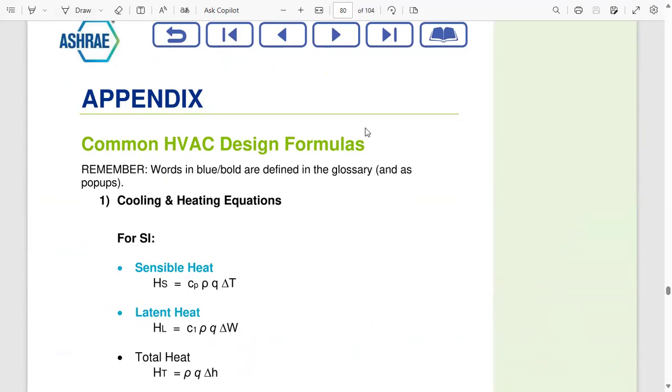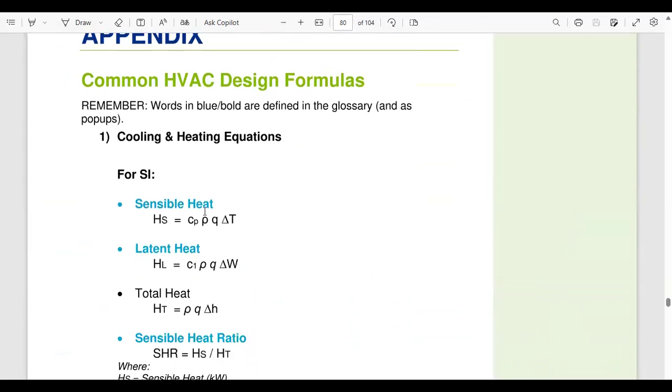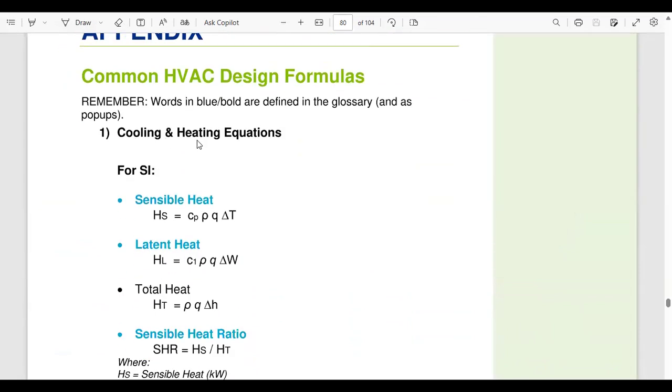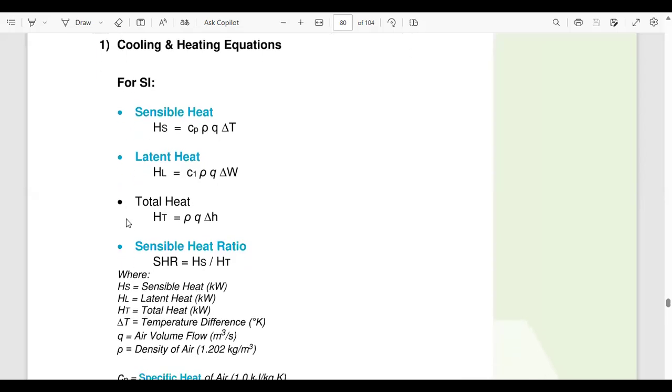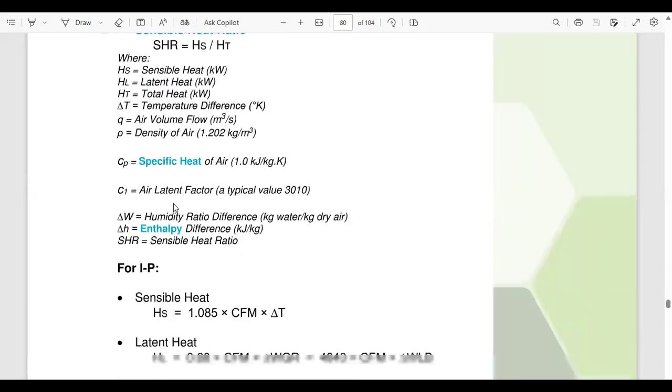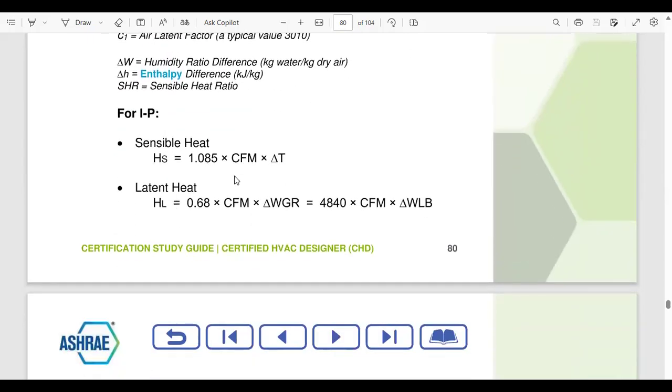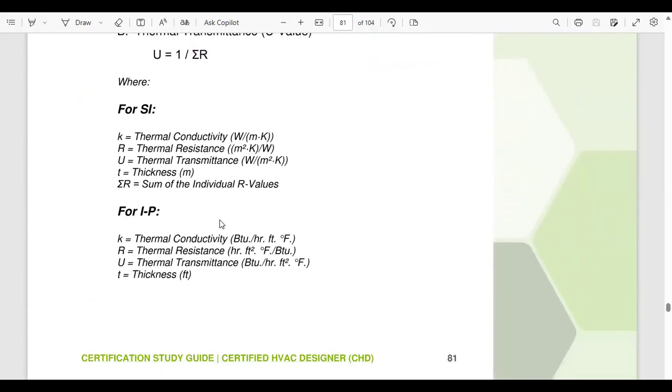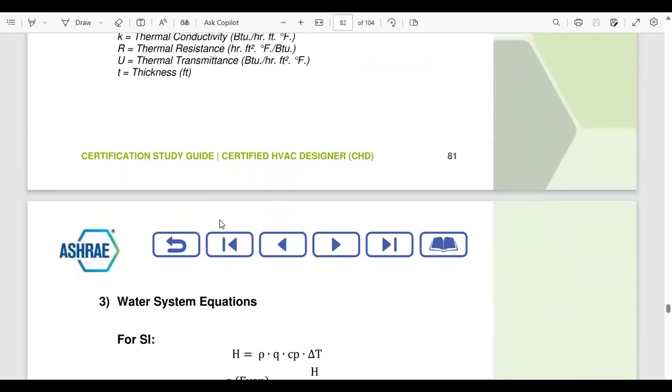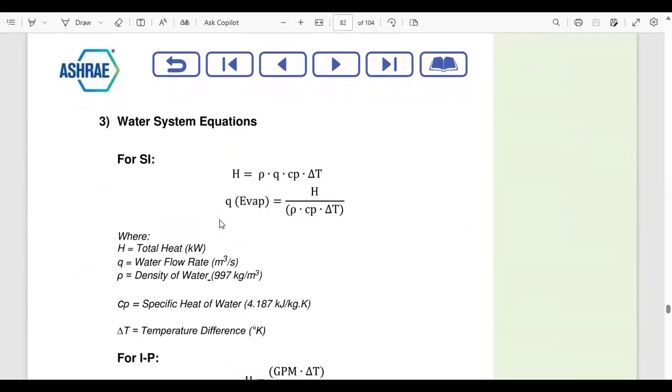For instance, we get cooling and heating equations in SI units. If you're comfortable with SI units, you can use SI units, and there are IP units as well. For thermal resistance, similarly R value, U value, we get both SI and IP units.